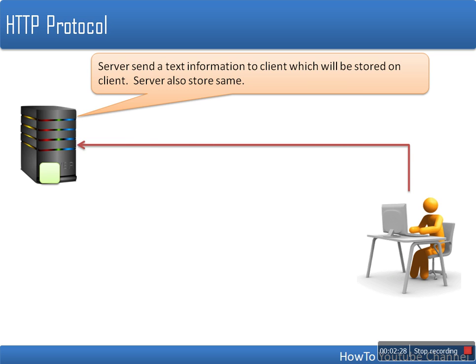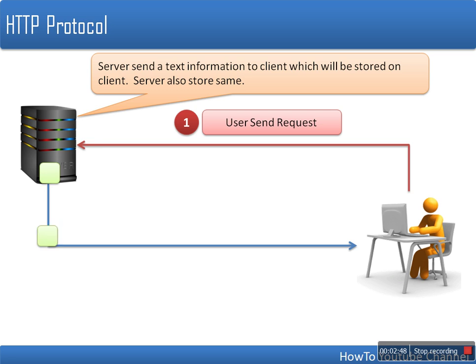Whenever a client sends a request to the server for the first time, the server sends a response to the client. With that response, the server includes a textual information. The server also stores the same information on itself. This information is in the form of name equals value — for example, name can be 'user' and value can be any number like 12347 8. This information is sent to the client along with the response.